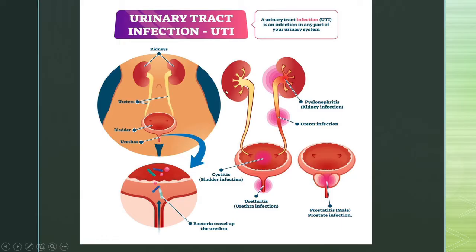If the kidneys get infected, it is called pyelonephritis — that is the upper urinary tract infection. In women, the urethra is very short, which is why they easily develop urinary tract infection. In men, the prostatic glands enlarge with age, pressing on the urethra, causing urine stasis in the bladder and increasing the risk of urinary infection.